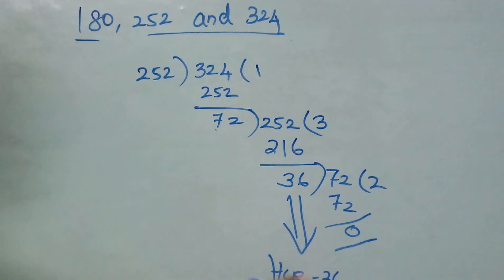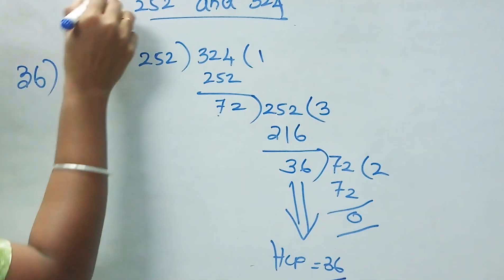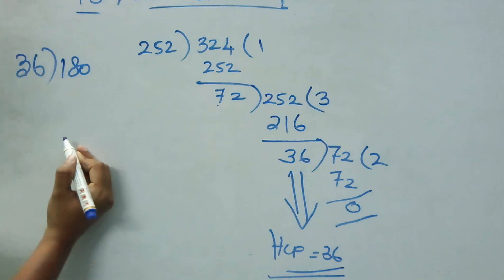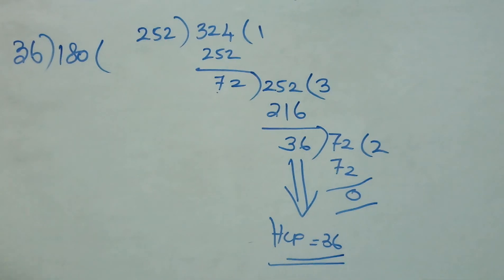So, again bring this 36 here as a divisor and the left out number 180 as dividend. Just see how many times it divides.